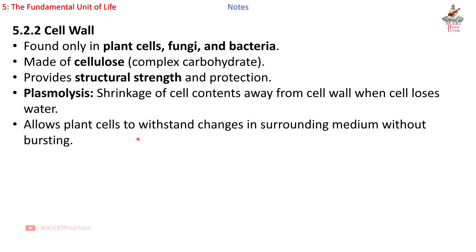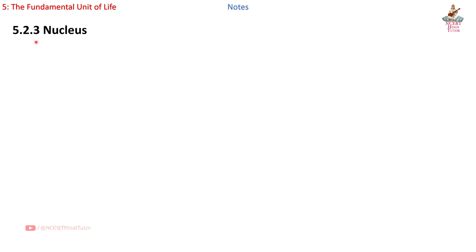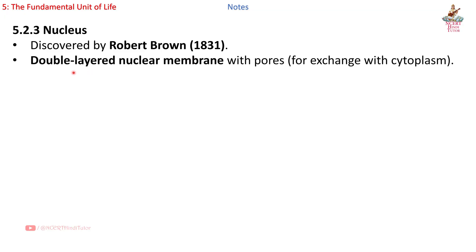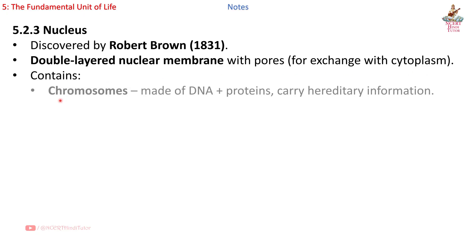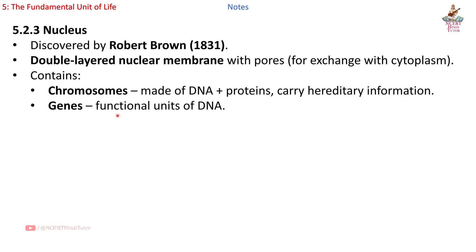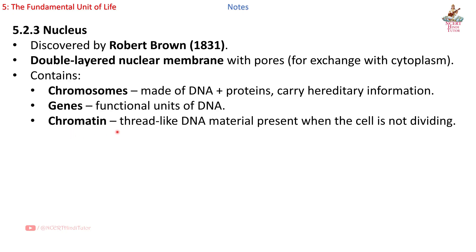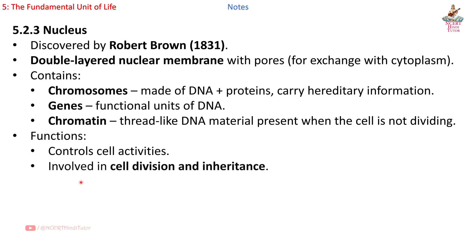The cell wall allows plant cells to withstand changes in surrounding medium without bursting. Section 5.2.3: Nucleus, discovered by Robert Brown (1831), has a double-layered nuclear membrane with pores for exchange with cytoplasm. Contains chromosomes made of DNA plus proteins, which carry hereditary information. Genes are functional units of DNA. Chromatin is thread-like DNA material present when the cell is not dividing. Functions: controls cell activities, involved in cell division and inheritance.